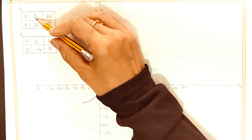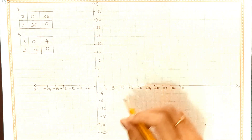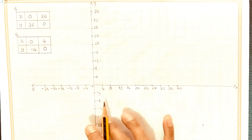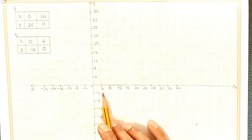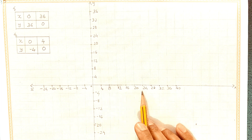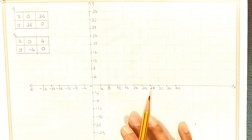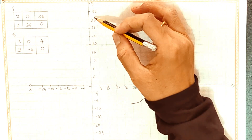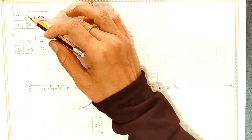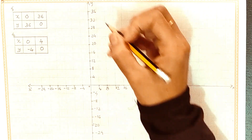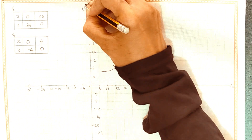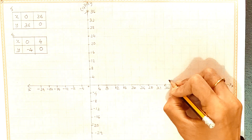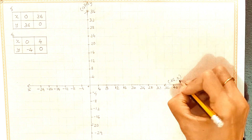For the first equation, points are: when x = 0, y = 36, and when x = 36, y = 0. We plot these points on the graph and join them.